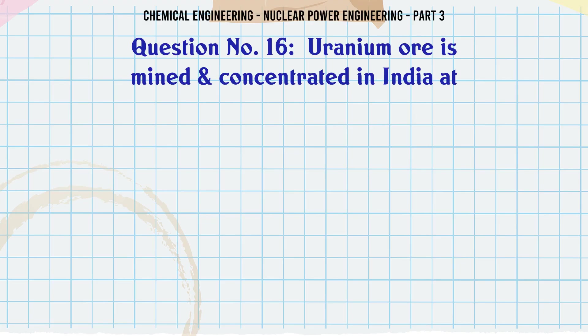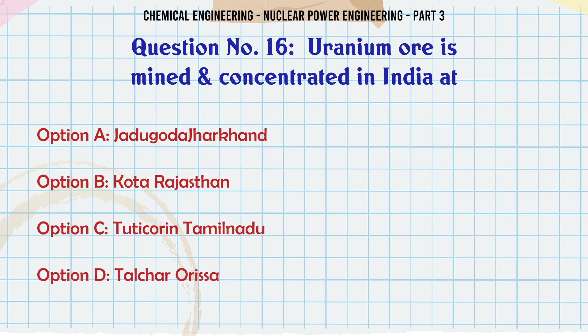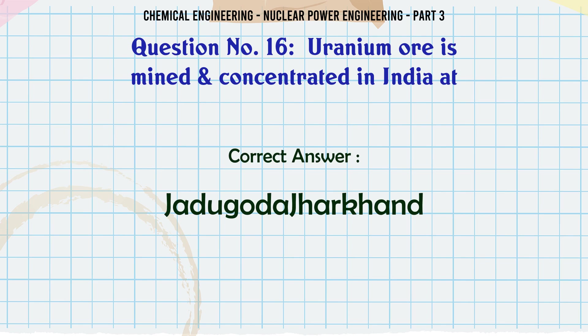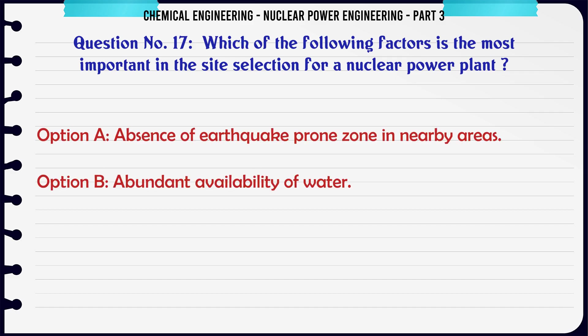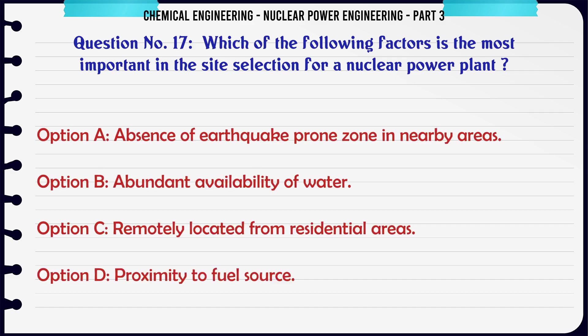Uranium ore is mined and concentrated in India at Jaduguda, Jharkhand. The correct answer is Jaduguda, Jharkhand.